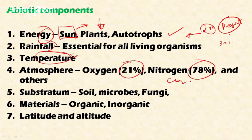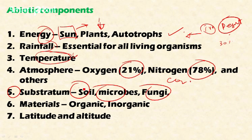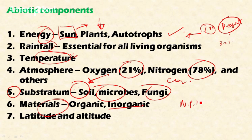The fifth abiotic factor is substratum, which includes soil, microbes, and fungi. Soil is the single most deciding factor for plant growth. If the soil is fertile, it can sustain diverse plant species, which in turn sustain different ranges of animal species. So soil is one of the most important abiotic components.